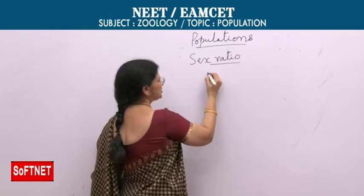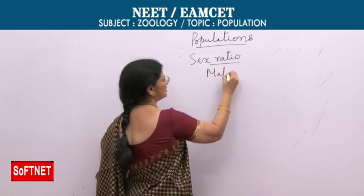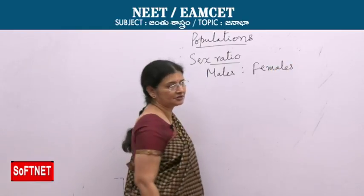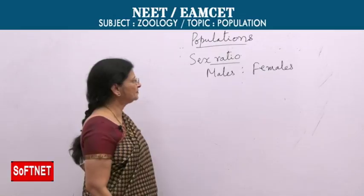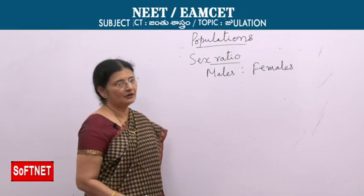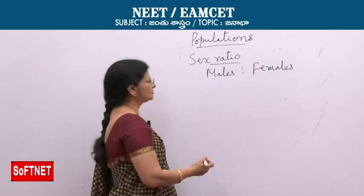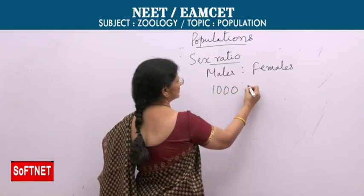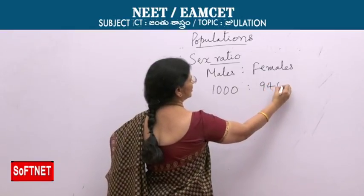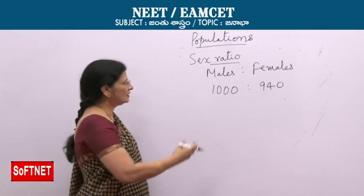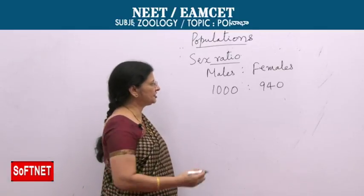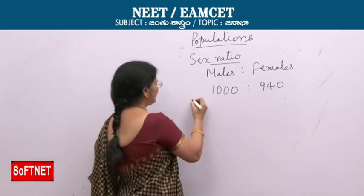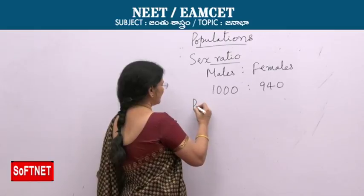The ratio between males and females is also an important character of a population. For example, in humans, the recent census said for 1000 males there are around 940 females. This is the sex ratio of the population.